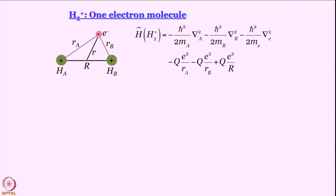To start with, let us write the Hamiltonian for H₂⁺, the one electron molecule. This is sort of an extension of hydrogen atom. Like hydrogen atom, this also has one electron only. The only additional thing here is that it has a second nucleus.